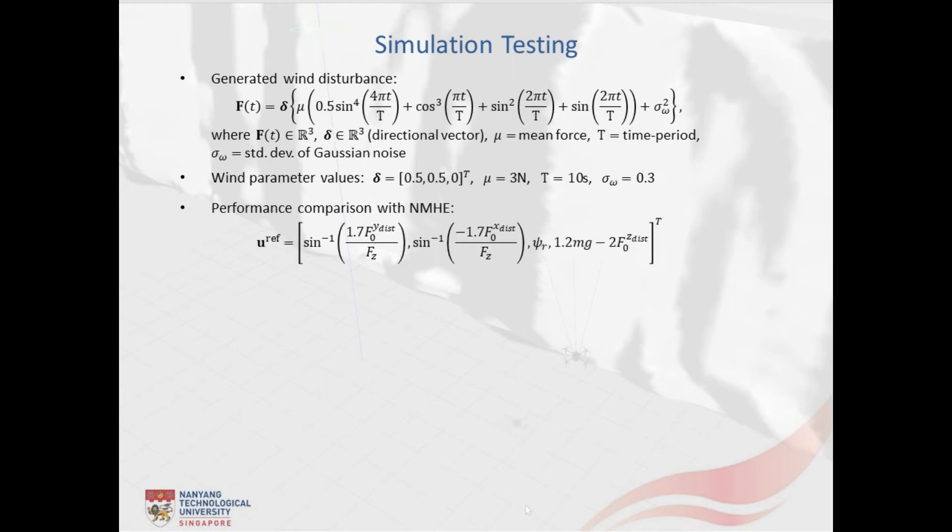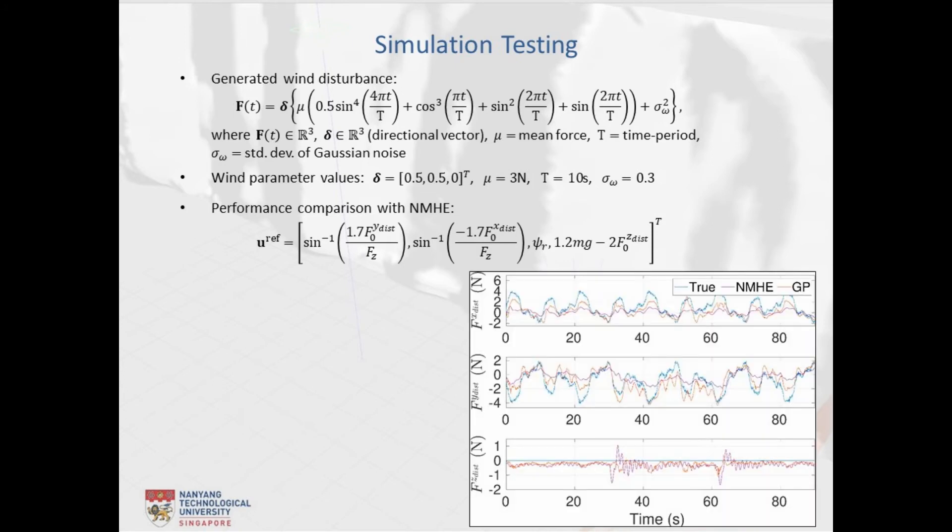Furthermore, the learning performance of the GP is compared with the non-linear moving horizon estimator, which is designed mostly like NMPC, but with the following reference control trajectory. Here is the plot that depicts the learned disturbances from NMHE and GP-based regression together with the true values. As can be seen, the learned disturbance forces from GP are significantly more accurate when compared to the NMHE, which is mainly credited to the underlying LSTM feature.